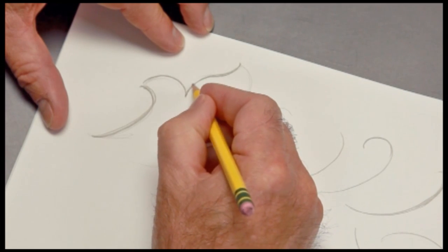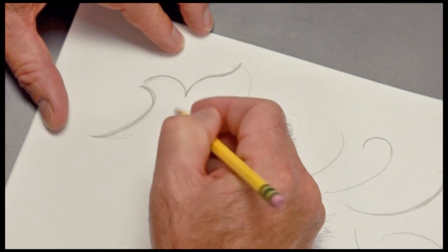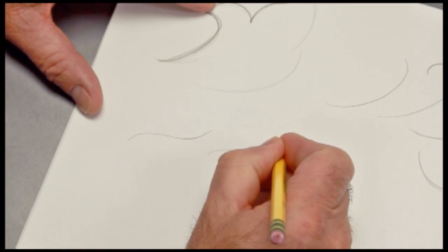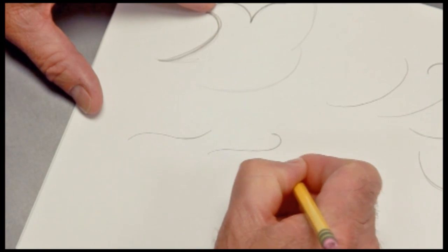The next line we need to talk about is the S line. The S can be a nice, gentle curve. It can be strongly hooked on one end or on both ends.